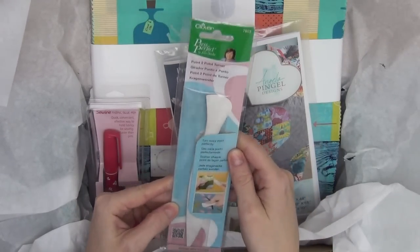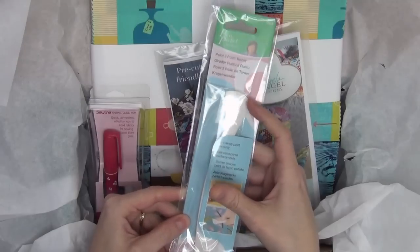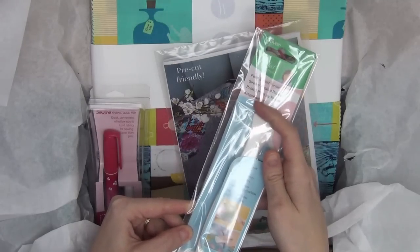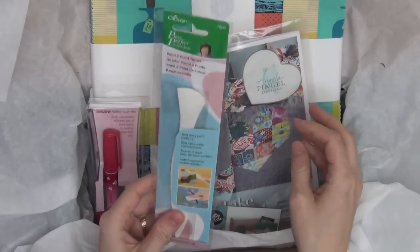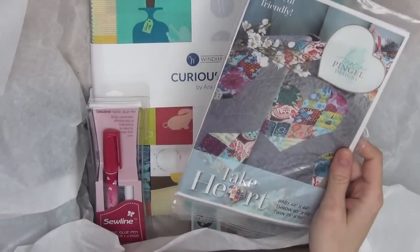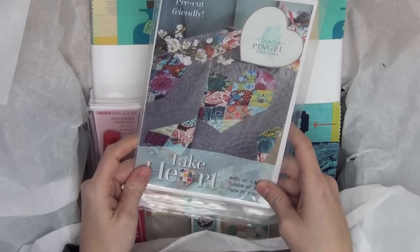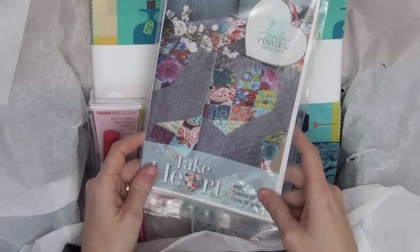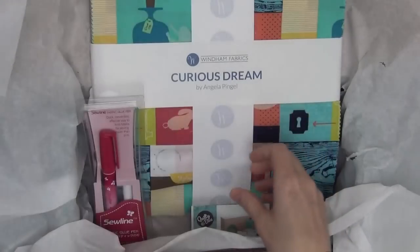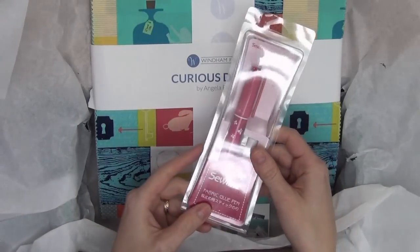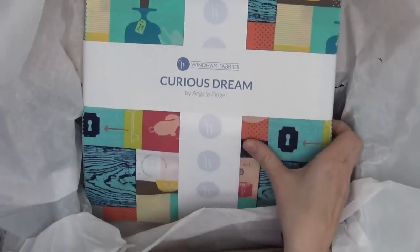We've also got, this looks like a combo point turner. We've got a point turner on one end and it looks like a Hera marker on the other end, which you can use to mark your fabric. It just kind of creates a crease line. That's super cool. I like that they combine the two tools together. Here is a nice little pattern from Angela and it's hearts. Perfect for February. Really cute. And then we have a little fabric glue pen. Excellent. I've been needing a new fabric glue pen, so that's awesome.